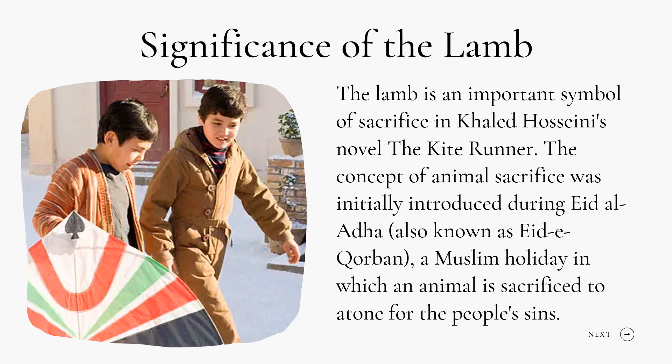Significance of the Lamb: The lamb is an important symbol of sacrifice in The Kite Runner. The concept of animal sacrifice was initially introduced during Eid al-Adha, a Muslim holiday in which an animal is sacrificed to atone for the people's sins. Hassan appears destined to die for Amir. When Assef raped Hassan for refusing to give up a kite he had caught for Amir, Amir recounts Hassan as barely struggling or sobbing, noticing Hassan's resignation and comparing it to the appearance of a lamb about to be sacrificed.